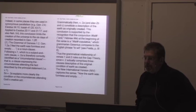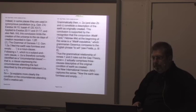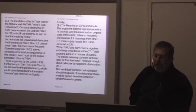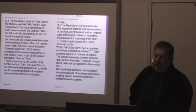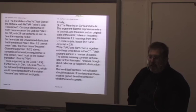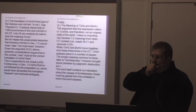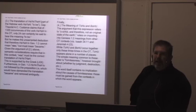That is a clause expressing the circumstances attending the fact described by the principal statement. So verse 2a explains more clearly the condition or the circumstances attending God's creative act. Grammatically then verses 2a and also 2b and c constitute a description of the earth as originally created. This conclusion is supported by the recognition that the conjunction wa, and the Hebrew we at the beginning of verses 2a, wa copulative. Copulative brings together which grammarian Jesinius compares to the English phrase to wit or to further explain or whatever. Thus the grammatical relationship of verses 1 and 2 rules out the gap theory since verse 2 actually comprises three clauses descriptive of the original condition of earth as created. The new international version captures the sense now the earth was formless and empty.